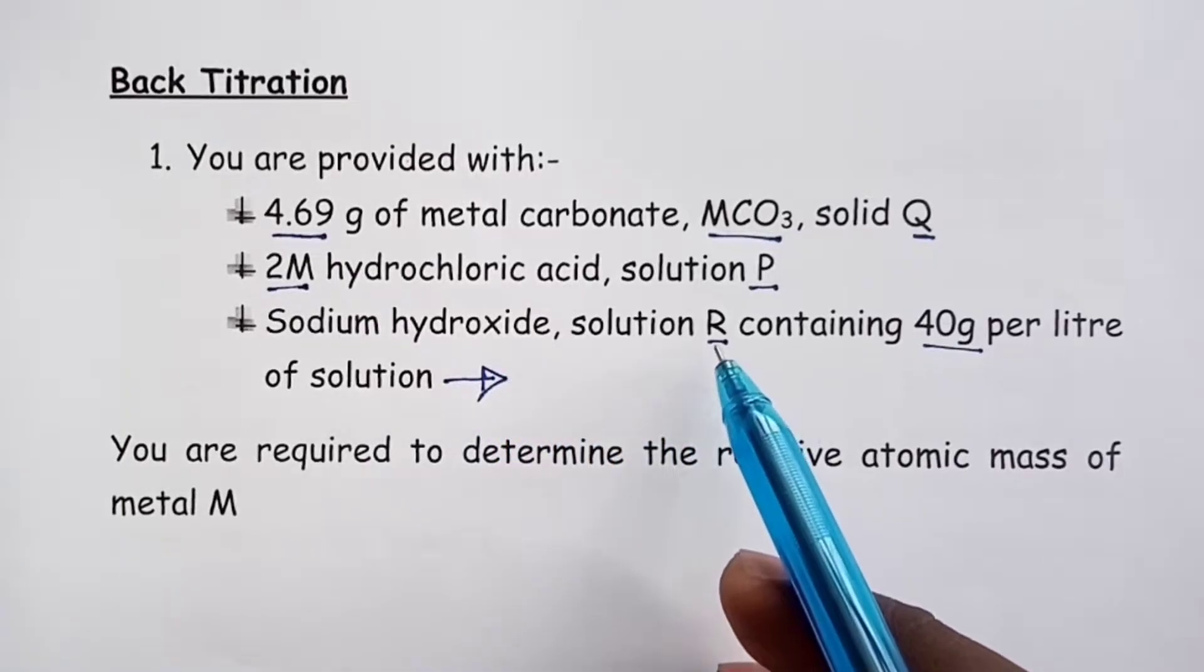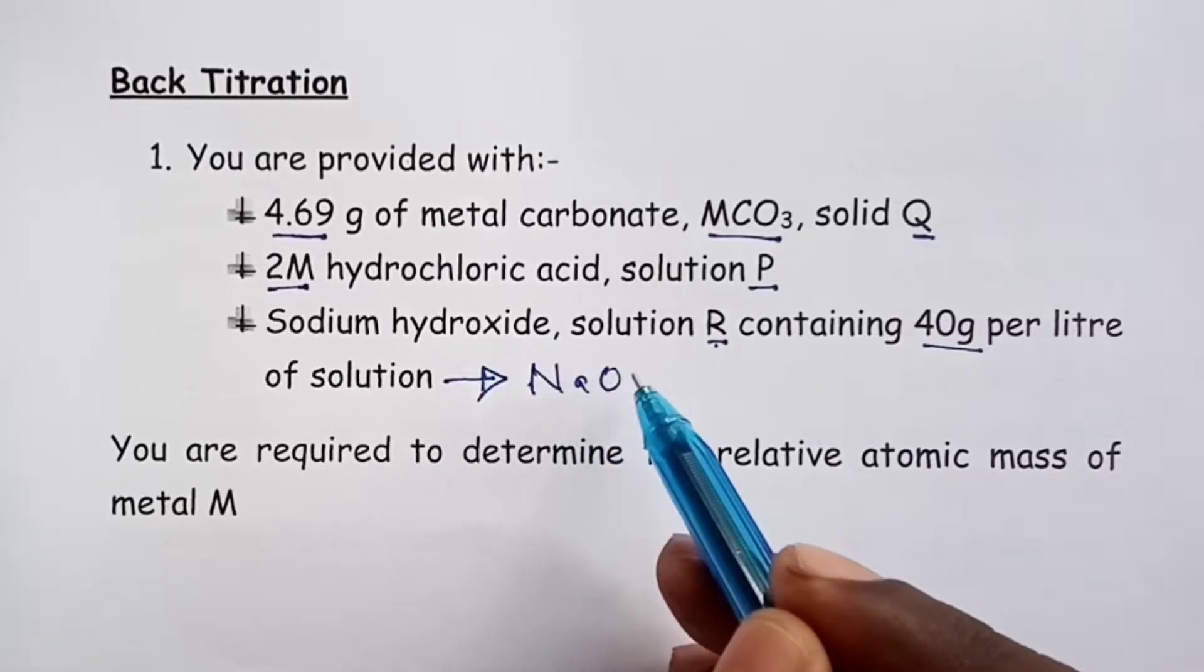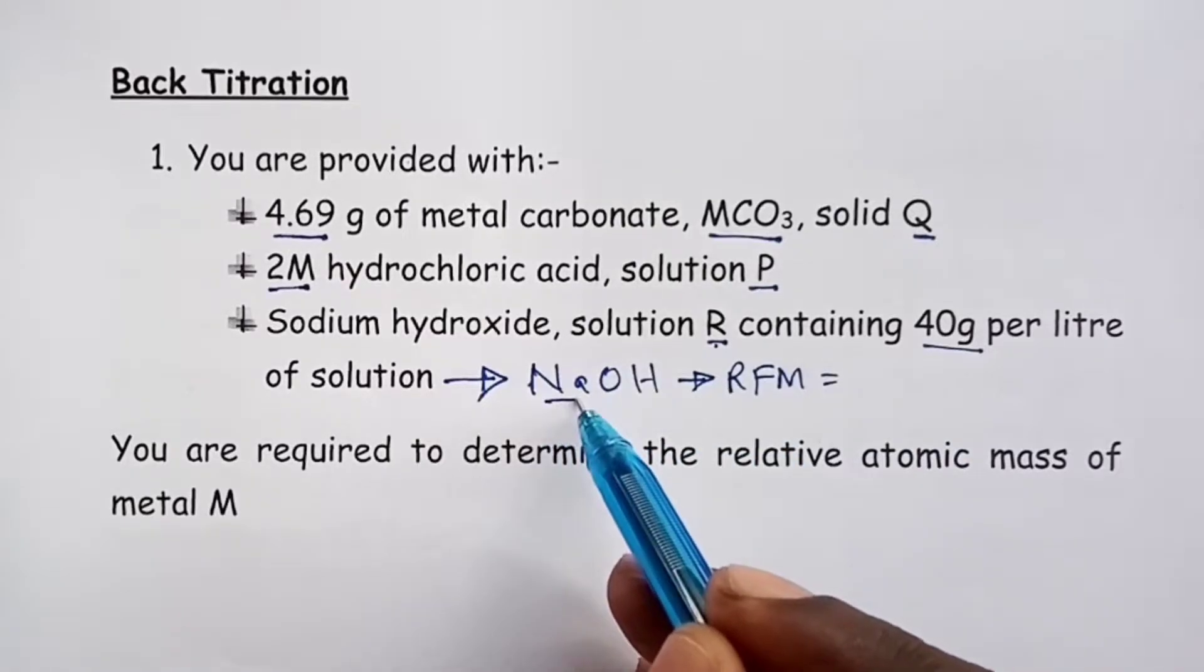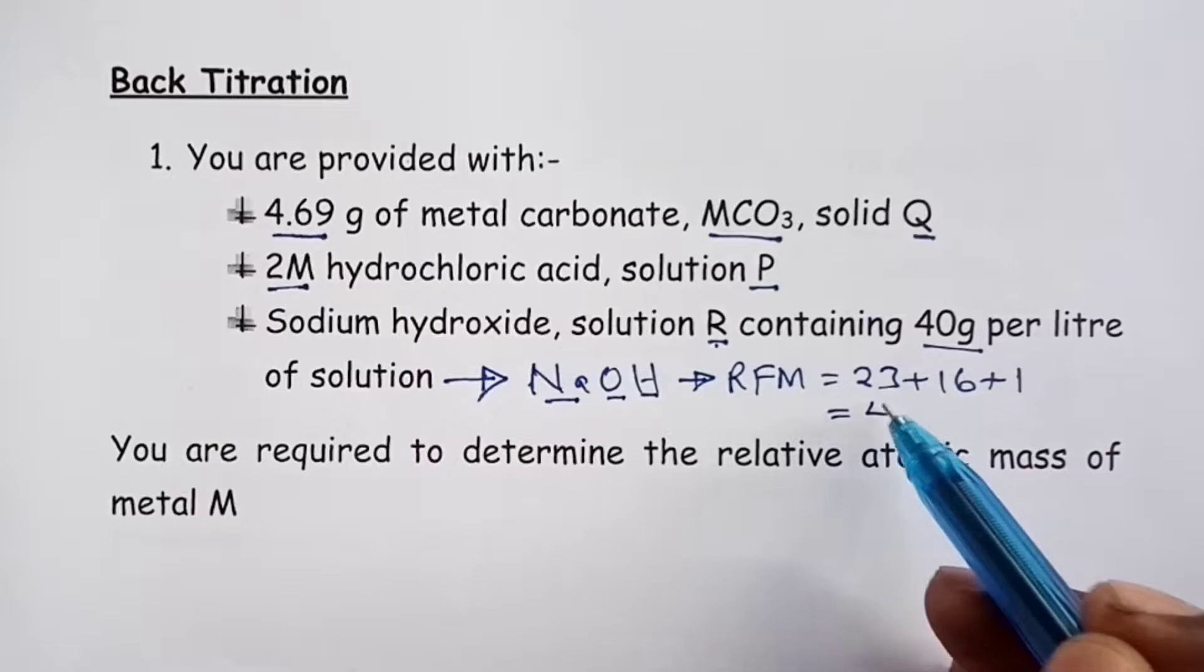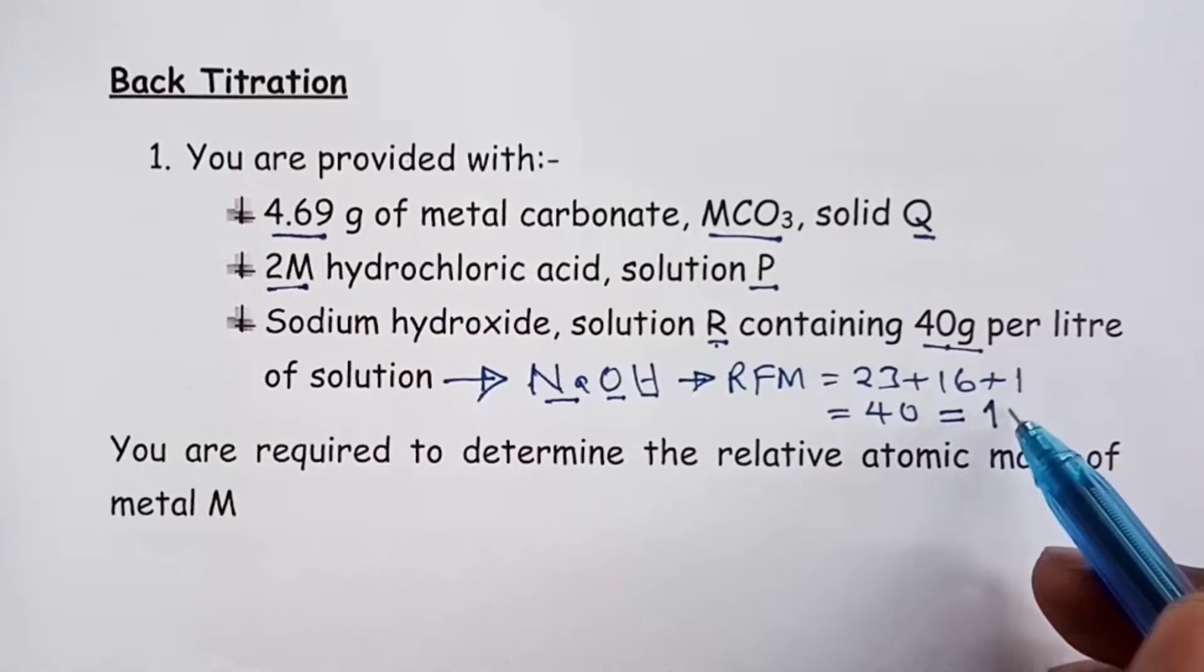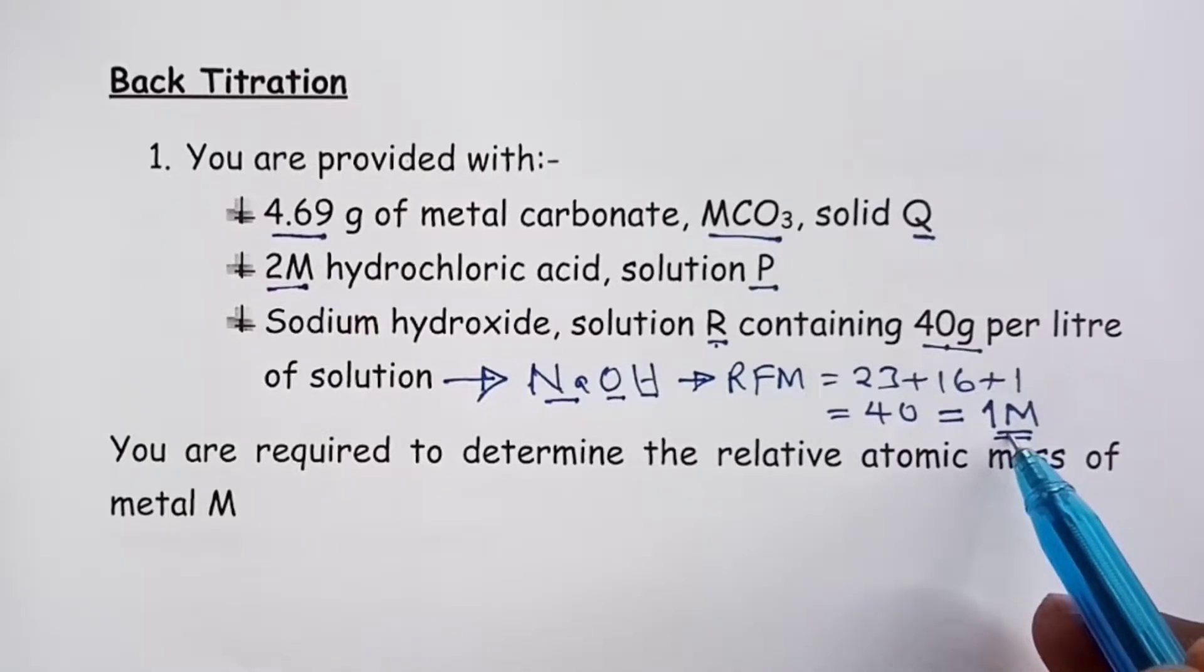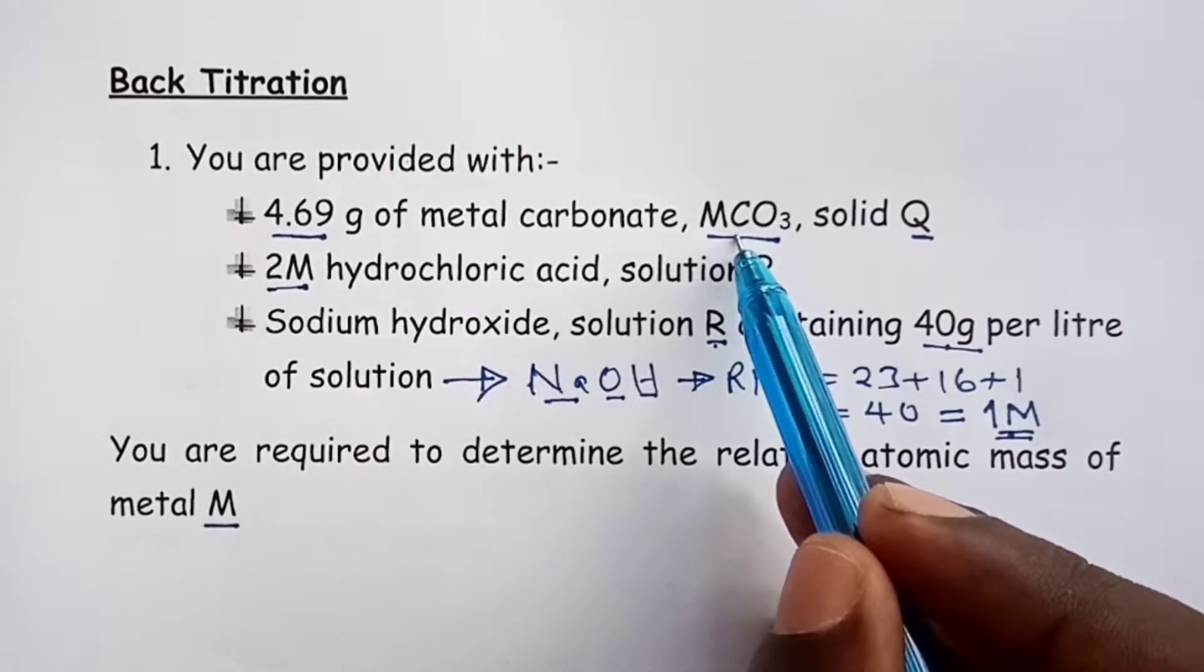Even before we get into our questions, it is good we understand the molarity of solution R from the information given here. So sodium hydroxide has the formula NaOH, which means that the relative formula mass is 23 for sodium plus 16 for oxygen plus 1 for hydrogen, which gives us 40. So if I have 40 grams per liter of sodium hydroxide and its RFM is also 40, it means that molarity of my solution is 1 molar. So solution R is actually 1 molar sodium hydroxide solution. In this experiment, we are required to determine the relative atomic mass of metal M in the carbonate MCO3.